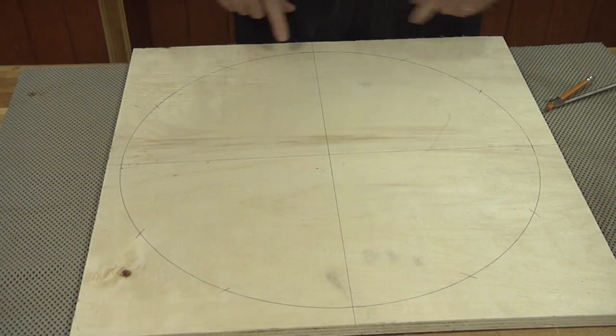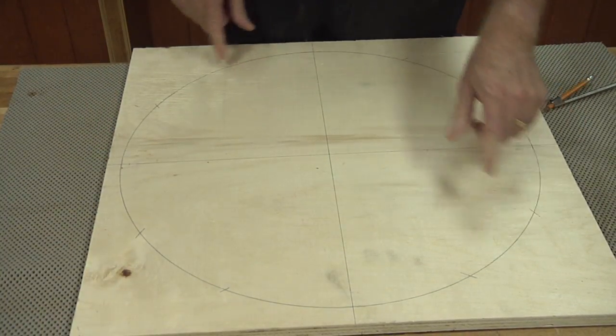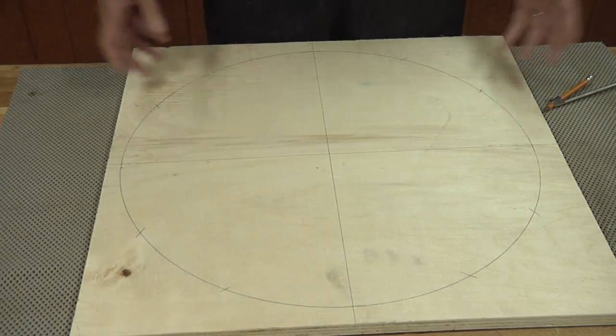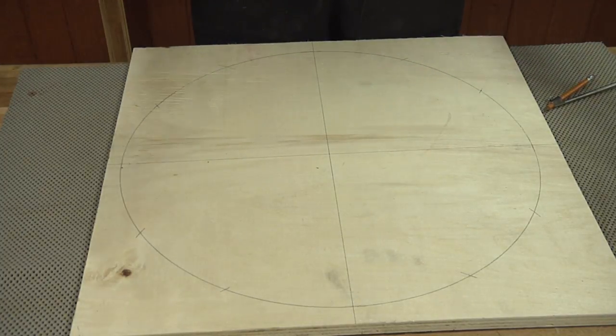So now you have 12 equally spaced marks around your circle so that you can have a clock, or anytime you want to divide a circle into 12 pieces.